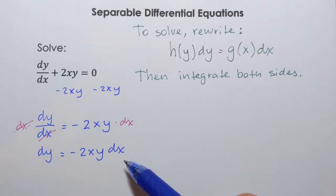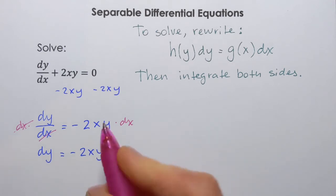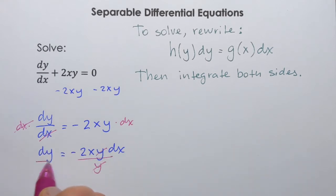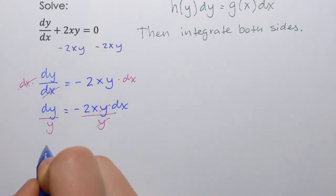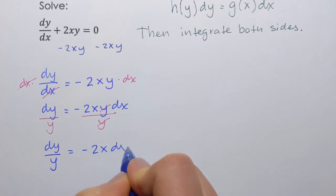Well, I'm almost there, right? The only thing I need to do is to take this y and make it appear on the left side. Well, I'll do that using division. So, I'll have to divide by y on the right hand side. That will cancel it. And then I will have to divide by y on the left side. Now, this is what I have. dy/y equals negative 2x dx.